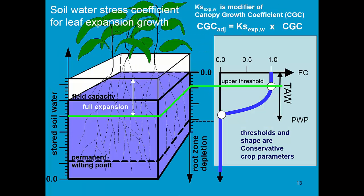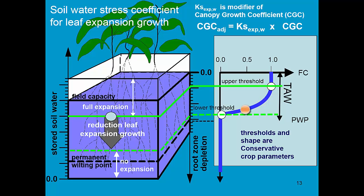This is described by a soil water stress coefficient. The soil water stress coefficient for leaf expansion growth modifies the canopy growth coefficient. As long as the water content is above the upper threshold, the green line, then there is no stress and Ks is one. When the water content drops below the green line, then we have a reduction of leaf expansion growth and it finally becomes zero at the lower threshold, and there is no longer an expansion.